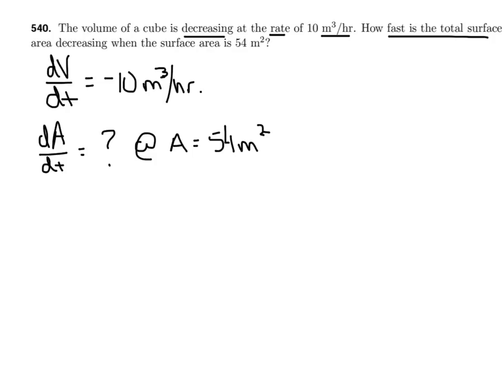Anytime we're doing a related rates question, I want you to pretend it's almost like you're watching a video of this action happening — kind of like watching a movie. And then at some point in the movie, we're going to hit the pause button. In this particular one, we're going to hit pause precisely at the one moment when the area is 54. It's not always going to be 54. There will be one special moment in time when the area is 54, and at that precise moment we're going to analyze how fast the surface area is changing.